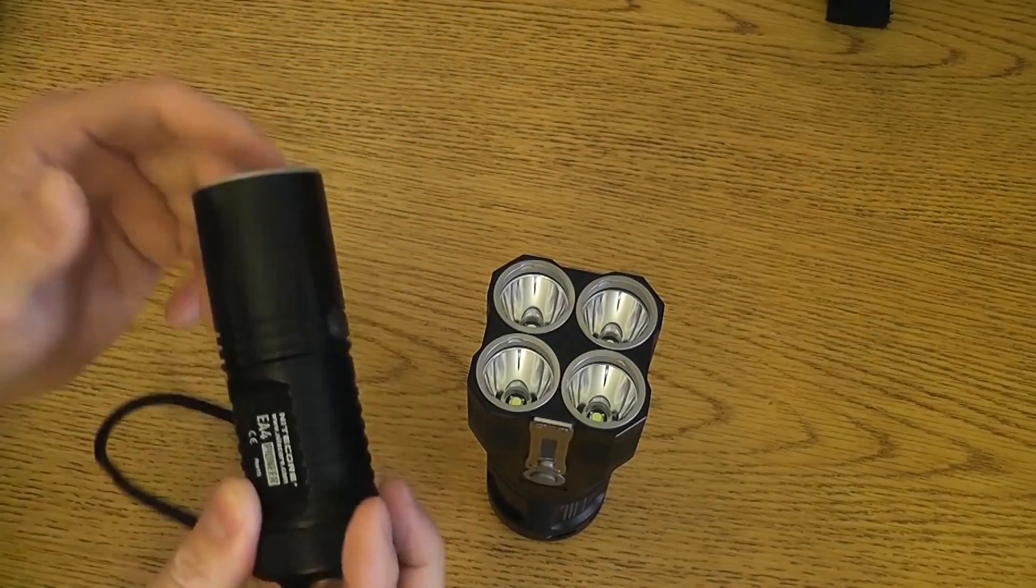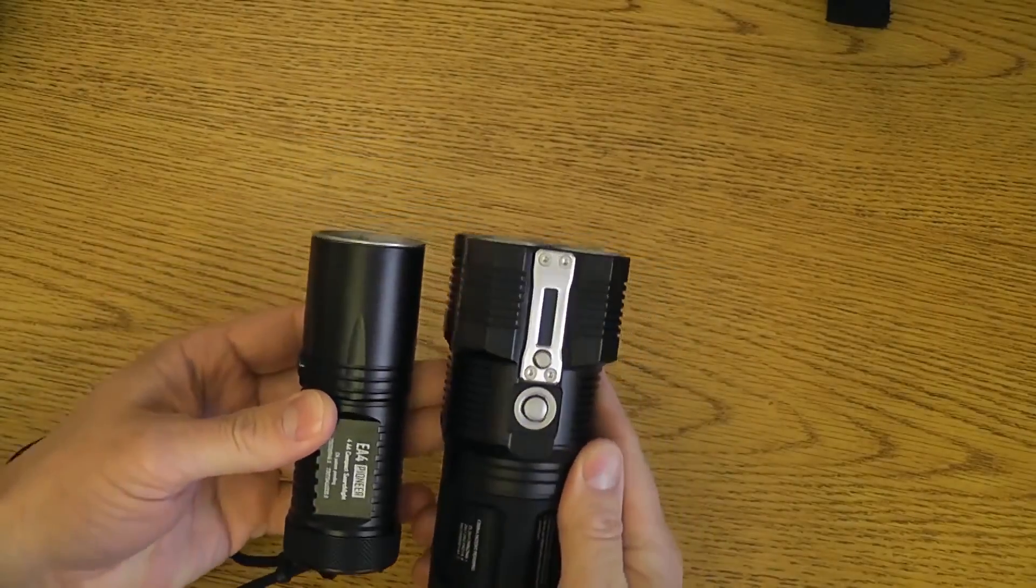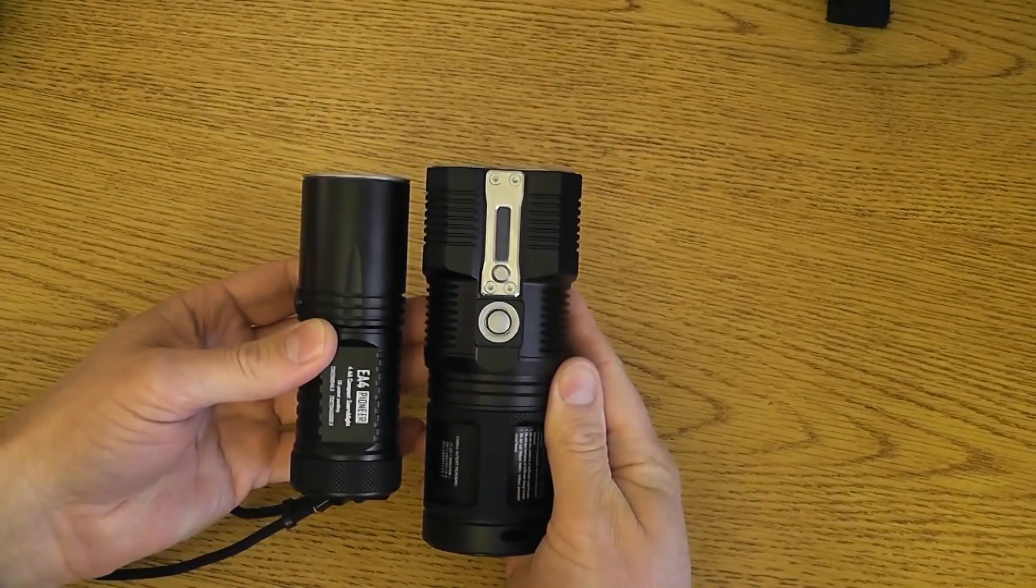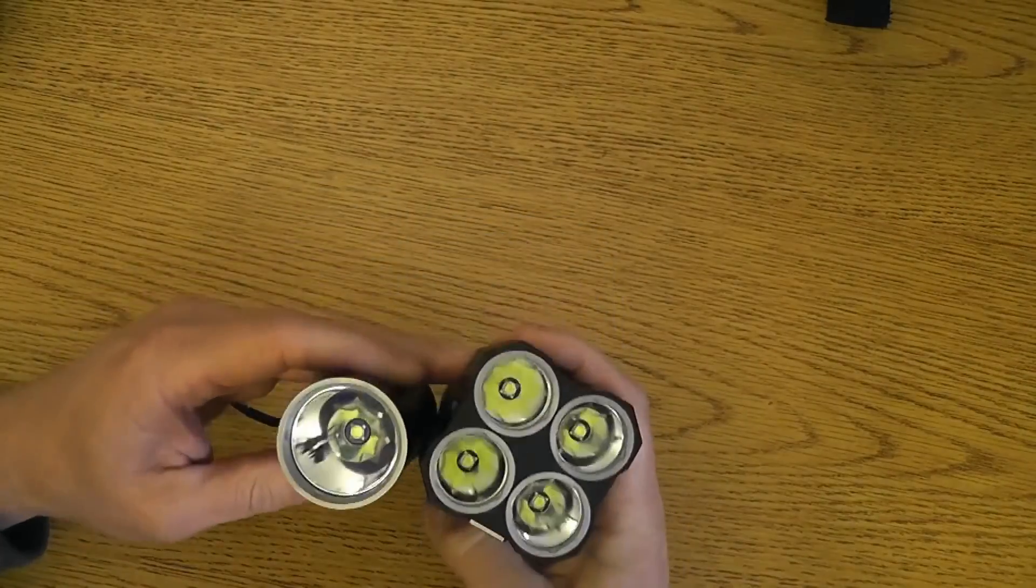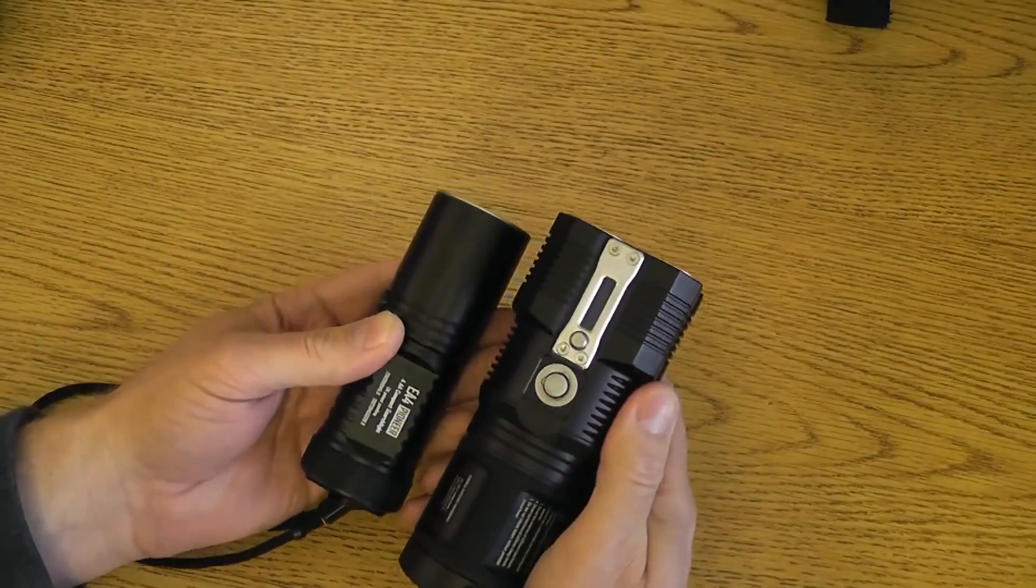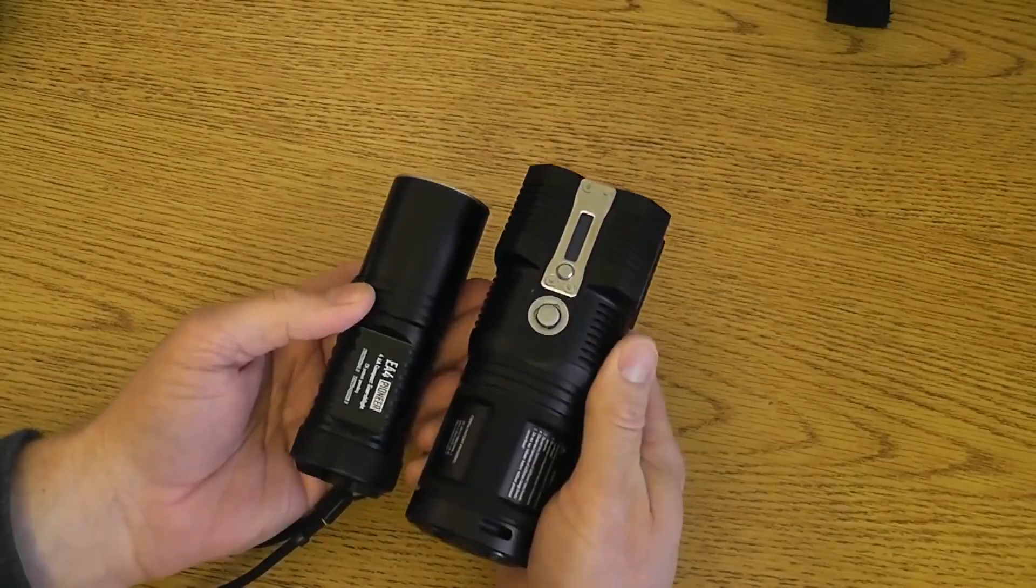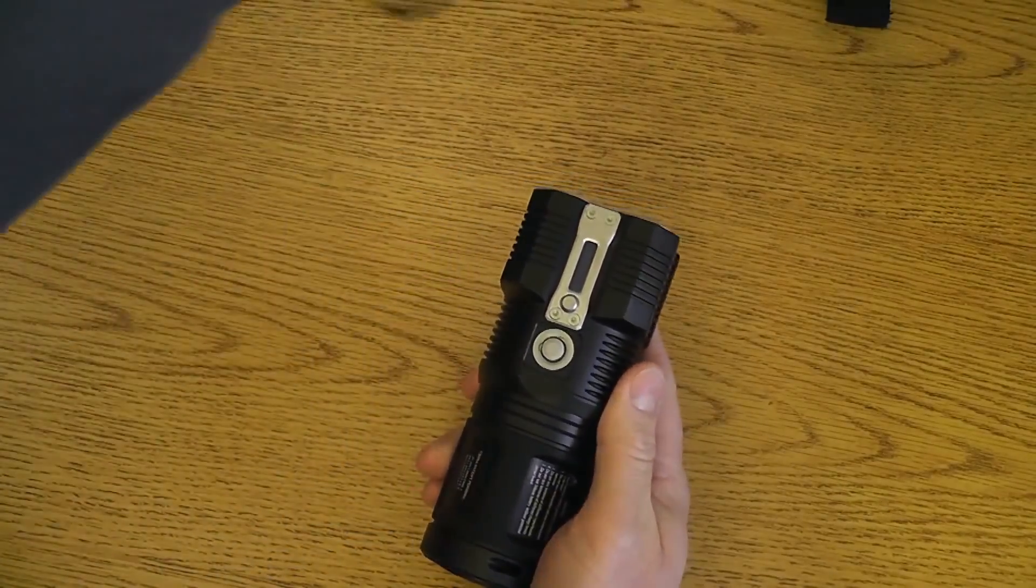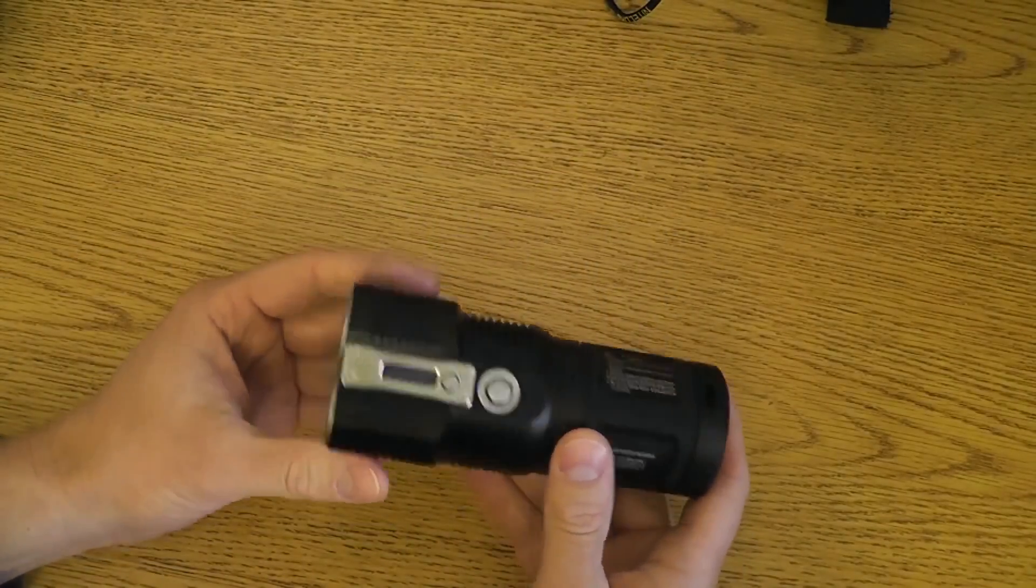There's kind of a comparison with the Nitecore EA4. You can see that it's not that much bigger. I mean, it's bigger, but we're talking single XML versus quadruple XML. So pretty impressive to see that you can even hold these in the same frame together, and this doesn't absolutely dominate this one or the EA4 in size. That was the most shocking thing to me overall is the size of this light and just how small it actually is.